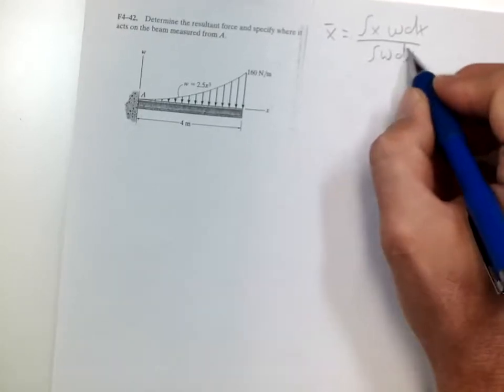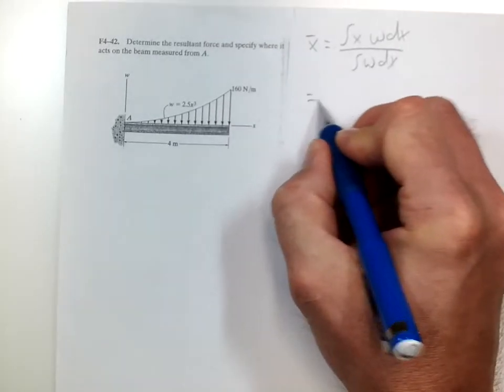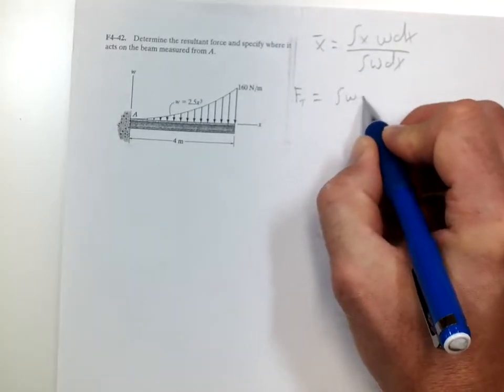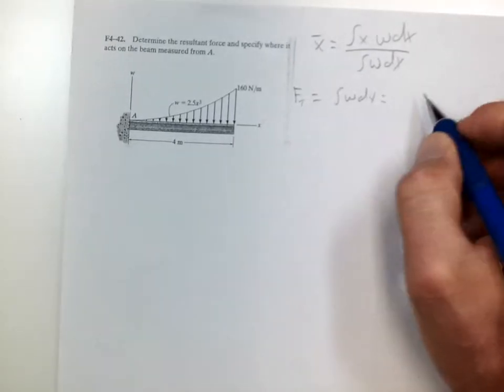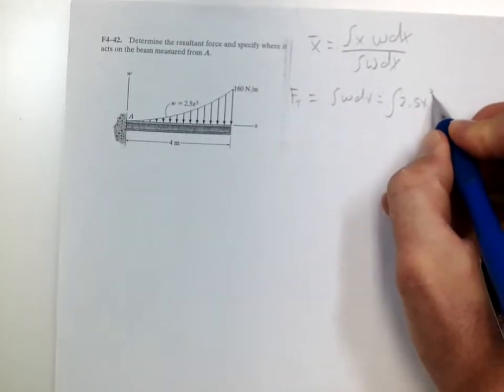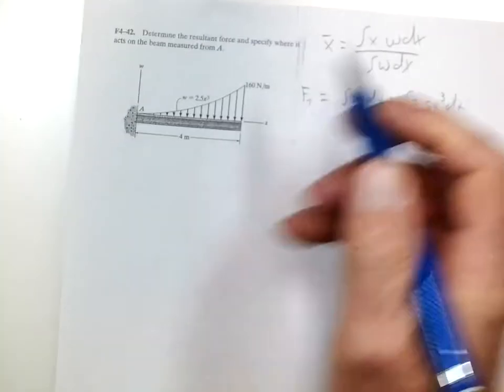Now, the integral of w dx is also the total force. So let's solve that integral first. So the total force is the integral of w dx, which is equal to the integral of 2.5x cubed dx. And I'm going to integrate that from 0 to 4.